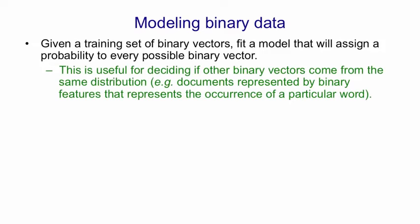There are several reasons why you might like to be able to do that. For example, you might have several different distributions of binary vectors, and you might like to look at a new binary vector and decide which distribution it came from. So you might have different kinds of documents, and you might represent a document by a number of binary features, each of which says whether there's more than zero occurrences of a particular word in that document. For different kinds of documents, you'd expect different counts for the different words, maybe also different correlations between words.